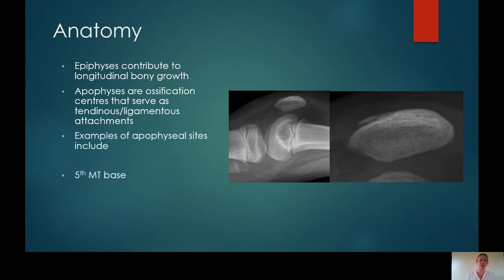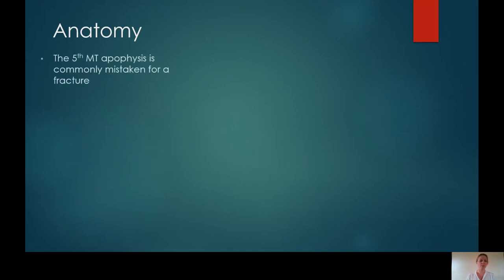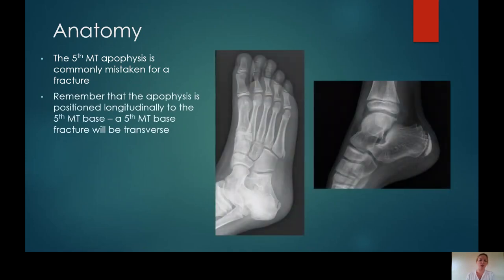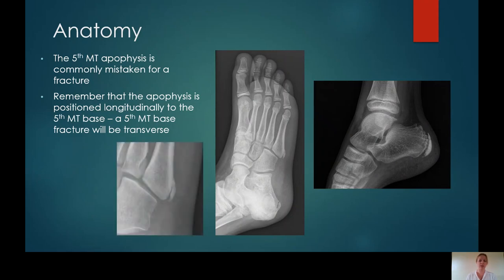You will see apophyses at the fifth metatarsal base, at the calcaneum and also the patella, although that list is not exhaustive. The fifth metatarsal apophysis is commonly mistaken for a fracture. Do remember that the apophysis at the fifth metatarsal base is always positioned longitudinally, whereas a fracture will be transverse. This is an example of a normal fifth metatarsal apophysis, and also a normal calcaneal apophysis.